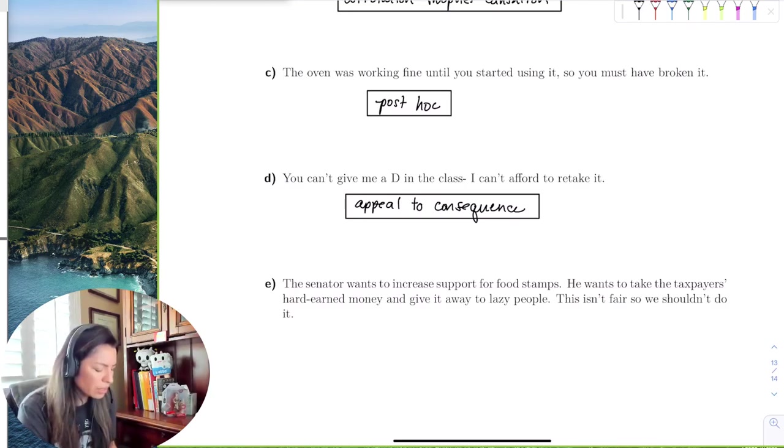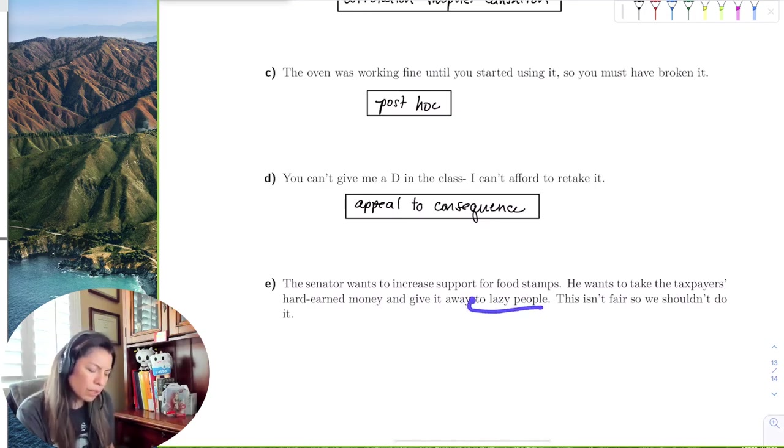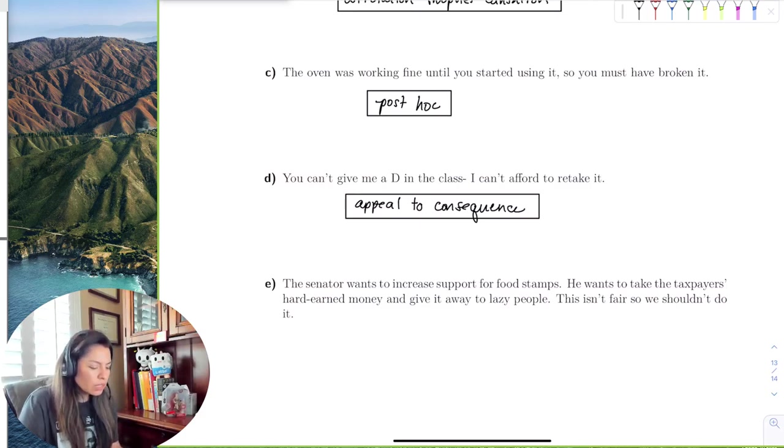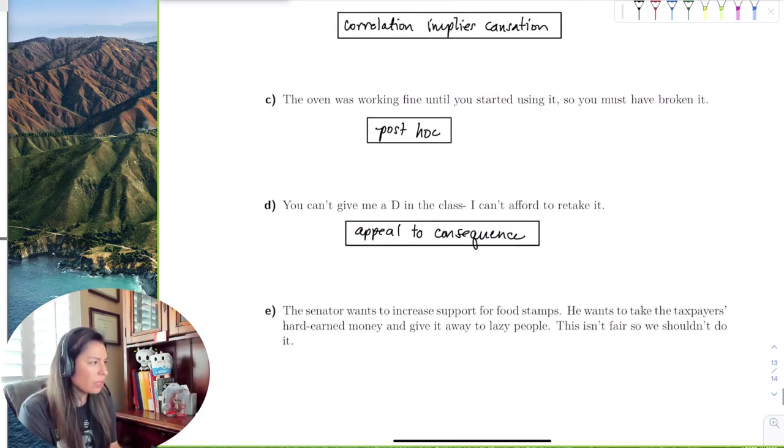So a senator wants to increase support for food stamps. He wants to take taxpayers' hard-earned money and give it away to lazy people. Well, first of all, I don't think that's really nice to say because people on food stamps work really hard too, and they're not lazy, right? And it is fair because everyone deserves to eat.